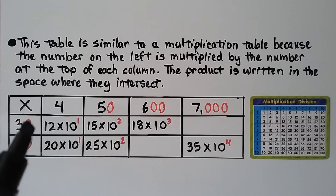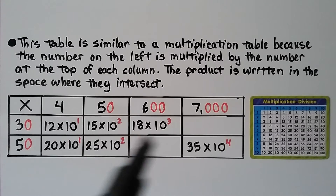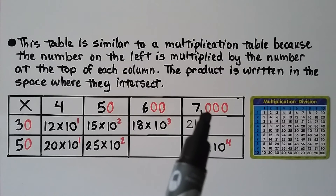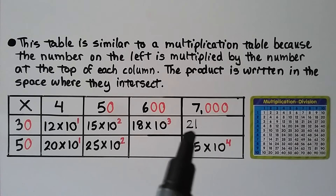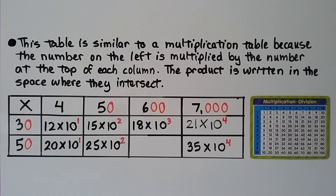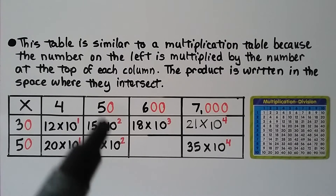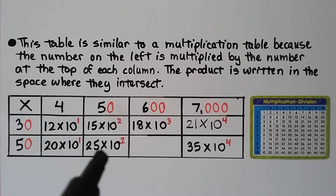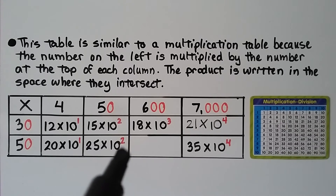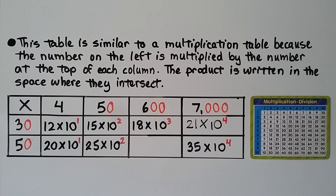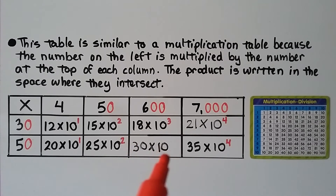30 times 7,000: basic fact 3 times 7 equals 21, four zeros, so 21 times 10 to the fourth power. 50 times 4: basic fact 5 times 4 is 20, one zero, so 20 times 10 to the first power. 50 times 50: basic fact 5 times 5 is 25, two zeros, so 25 times 10 to the second power. 50 times 600: basic fact 5 times 6 equals 30, three zeros, so 30 times 10 to the third power.